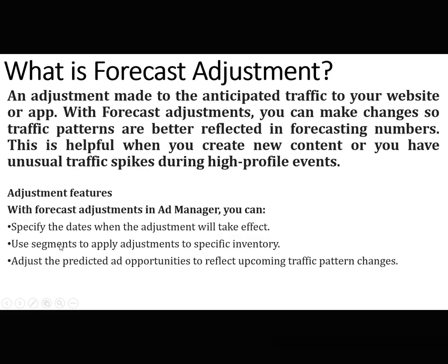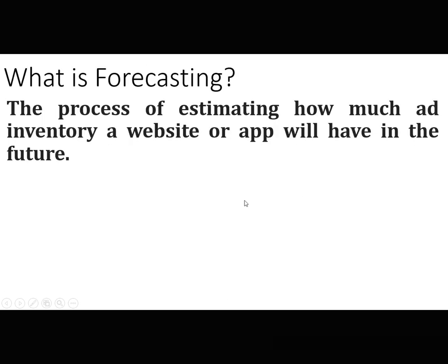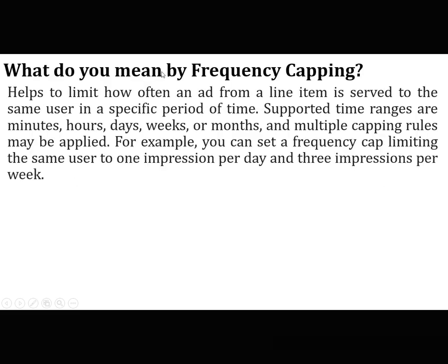What is forecast adjustment? An adjustment made to the anticipated traffic to your website or app. With forecast adjustments, you can make changes so traffic patterns are better reflected in forecasting numbers — helpful when you create new content or have unusual traffic during high-profile events. What is forecasting? The process of estimating how much ad inventory a website or app will have in the future. What do you mean by frequency capping? It helps limit how often an ad from a line item is served to the same user in a specific period of time.